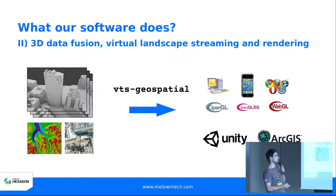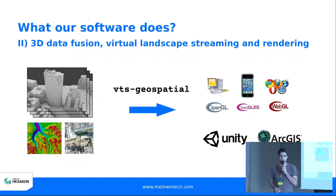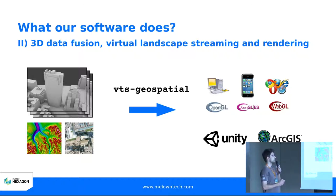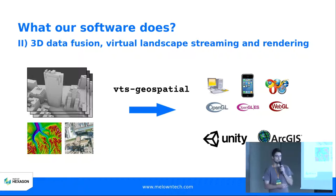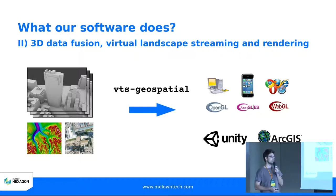We have a complementary open source project called VTS Geospatial. It's basically a framework or system for 3D data fusion and virtual landscape streaming and rendering. It takes all these 3D models, DEMs, ortho photos, vector data — which will be the theme of this talk — puts them all into VTS Geospatial, which manages and fuses the data and streams them to various clients across form factors and platforms.